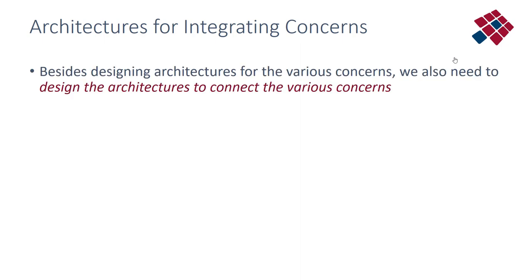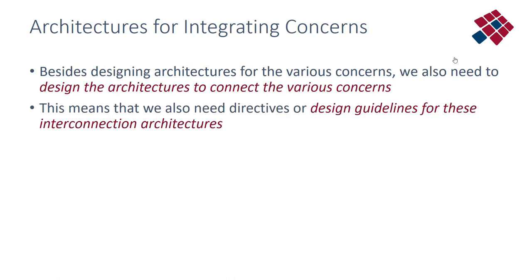Looking at the architectures for integrating those concerns, we now realize that we don't only have to design architectures for the main concern and the main functional structure, but also for the various other concerns. We need to design the architectures and to connect the various concerns to the main concern. This means we also need directives or design guidelines for these interconnection architectures — how do we interconnect these various concern architectures with the main functional structure?